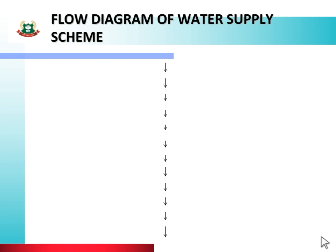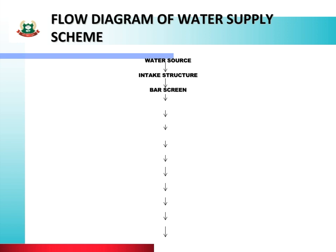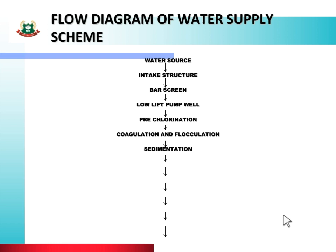Next we will see the flow diagram of the water supply scheme, showing how water is taken from the source to the consumer. Water comes from the water source to the intake structure. From the intake structure, water passes through a bar screen to the low lift pump well. From there, water goes through various treatment processes: pre-chlorination, coagulation and flocculation, sedimentation, filtration, and post-chlorination. Finally, it is collected in a sump well, from where water is pumped to an elevated service reservoir through a high lift pump, and then distributed through the distribution system.